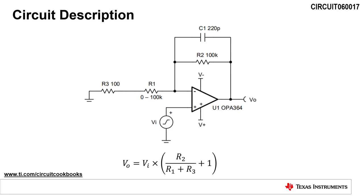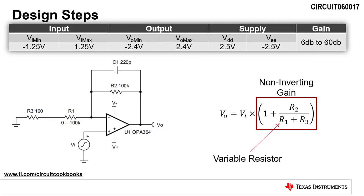This video explains how to design this circuit using TI's OPA364 in a few easy steps. The input for this circuit ranges from negative 1.25 volts to positive 1.25 volts. The output swings from negative 2.4 volts to positive 2.4 volts. The design uses dual 2.5-volt supplies, and the gain varies from 6 dB, or 2 volts per volt, to 60 dB, or 1,000 volts per volt.